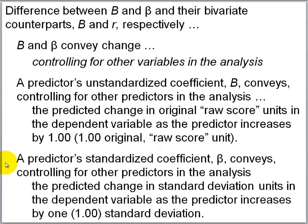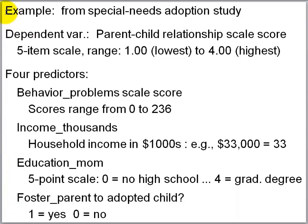A predictor's standardized coefficient beta conveys, controlling for other predictors in the analysis, the predicted change in standard deviation units in the dependent variable as the predictor increases by one standard deviation. We will use an example from the special needs adoption study to demonstrate multiple regression analysis. To make good sense of the unstandardized coefficients — the b's — I need to explain how the variables in the multiple regression equation are coded.